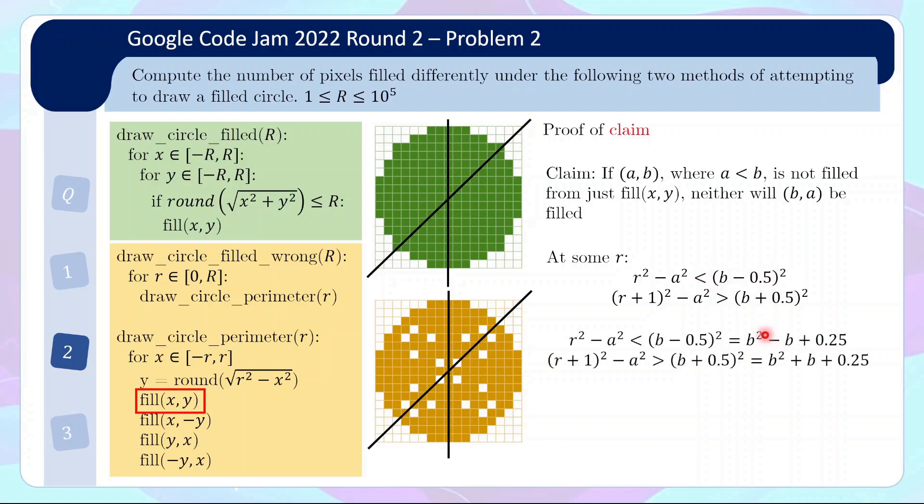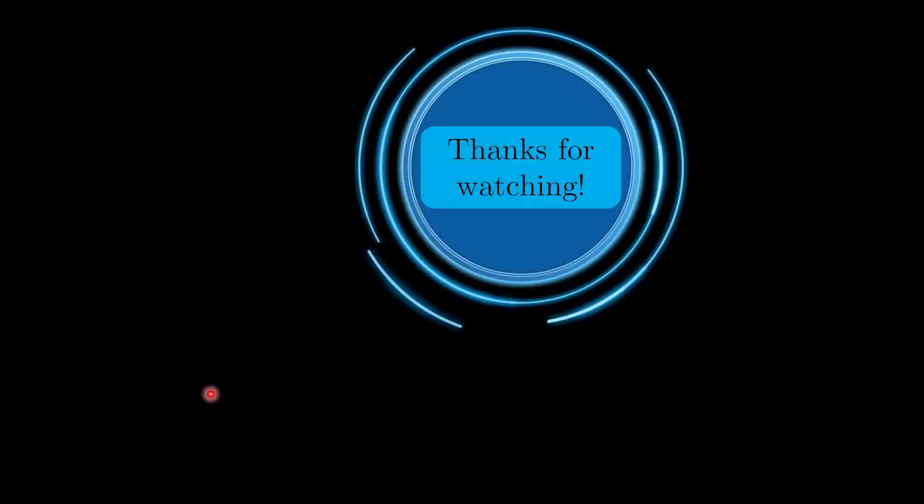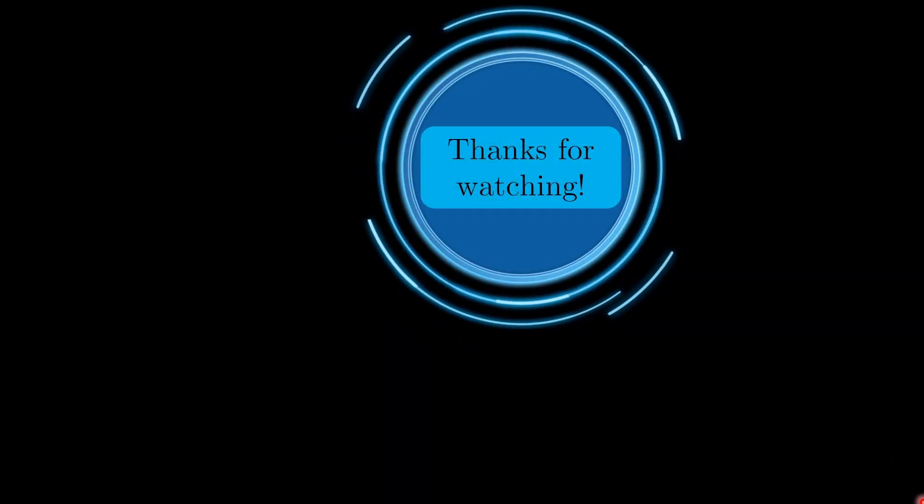So if we just expand the squares, this (b - 0.5)^2 is b^2 - b + 0.25. (b + 0.5)^2 is b^2 + b + 0.25. So what happens is, if we shift the b^2 across and the a^2 across, then R^2 - b^2 is now less than this. Using the fact that b is bigger than a, this is actually less than (a - 0.5)^2. So similarly, as we increase R, there will be some point where we are just below a - 0.5. And then the next value of R will be above a + 0.5. So the rounding will cause the procedure to miss a. So similarly, (b,a) will not be filled if we just stick to the filled x,y step.